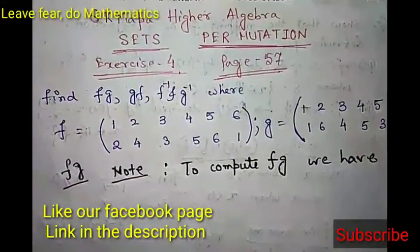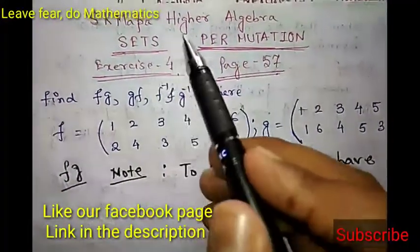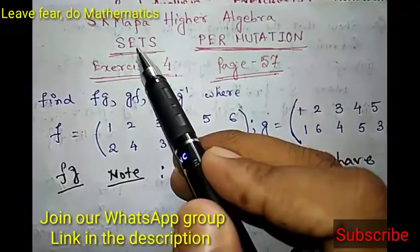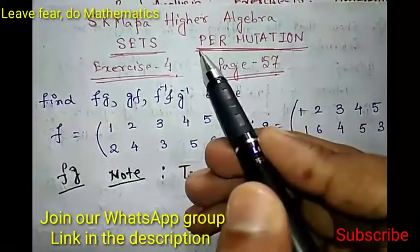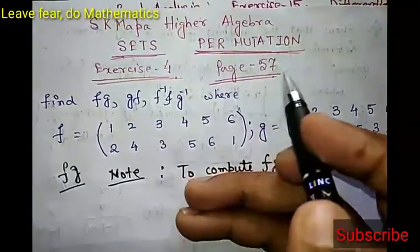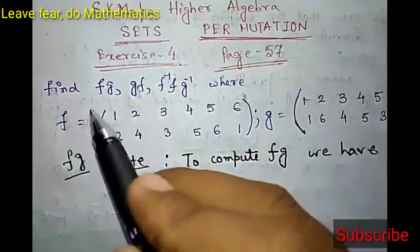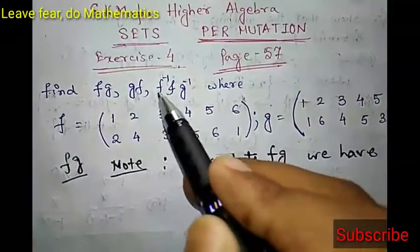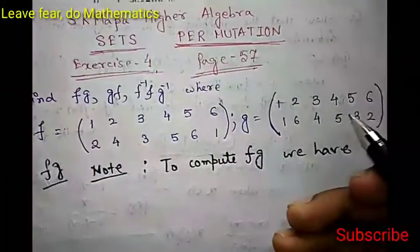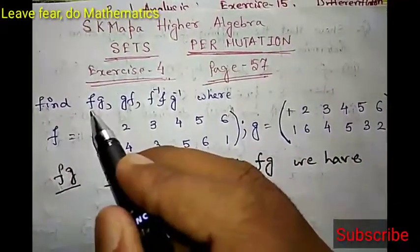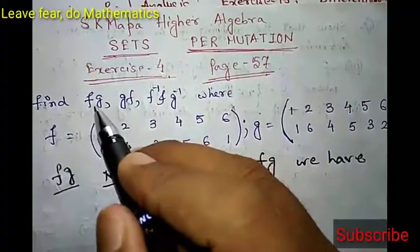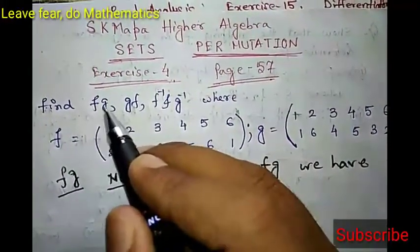Hello friends, welcome to Leapfrog Mathematics. Today we are going to solve another problem from Hall and Knight's Higher Algebra, Chapter 6 - Problems on Permutation, Exercise 4, page number 57. The problem says: find fg, gf, f inverse, g inverse, where f is given by this permutation and g is given by this permutation. Here fg is the product of permutations f and g, or you can say the composition of the two permutations f and g.